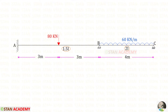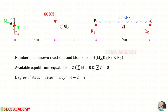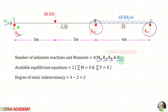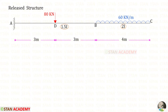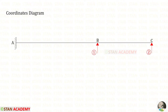At point A there is a fixed support. At point B there is a hinged support and at point C there is a roller support. In this beam the number of unknown reactions and movements are 4: moment MA and vertical reaction RA at A, and vertical reactions RB and RC at B and C. The degree of static indeterminacy is 4 minus 2, which equals 2. We will release RB and RC, so the beam becomes a cantilever beam.